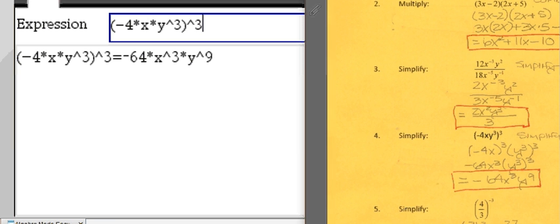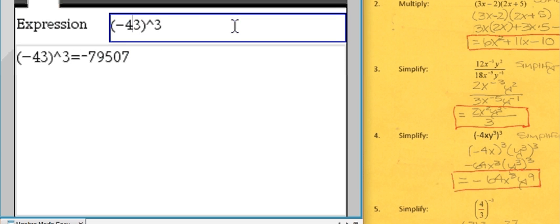How about this one? 4 divided by 3 raised to the negative 3. Here we go: 27 over 64. What if I don't use parentheses for the exponent? I still get the right answer. This is just to be on the safe side, using parentheses for the exponent.